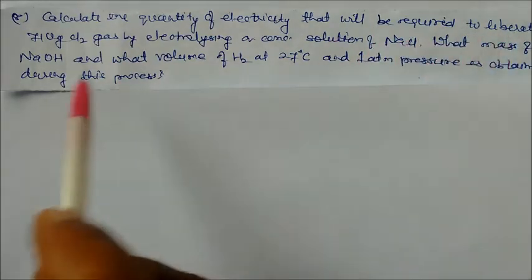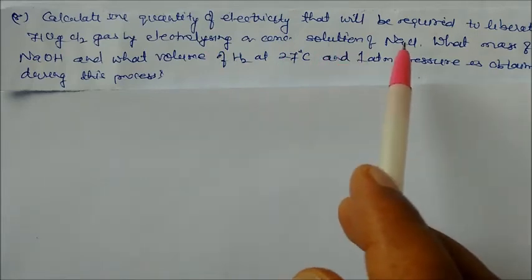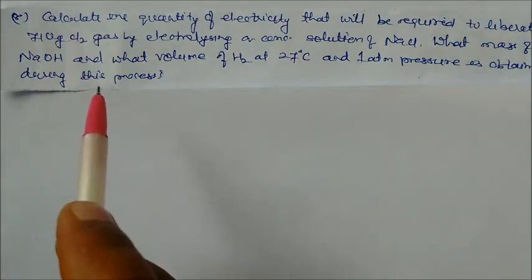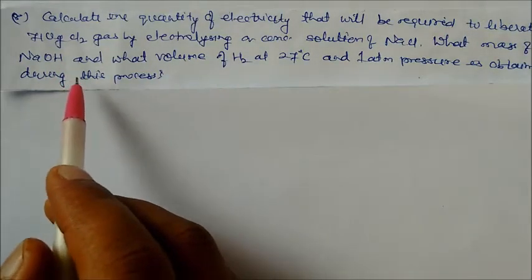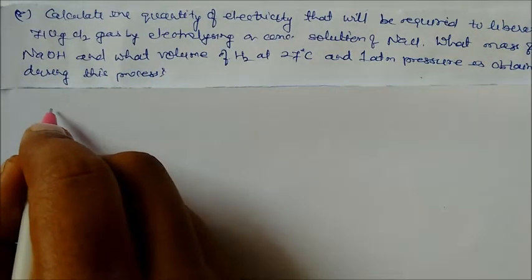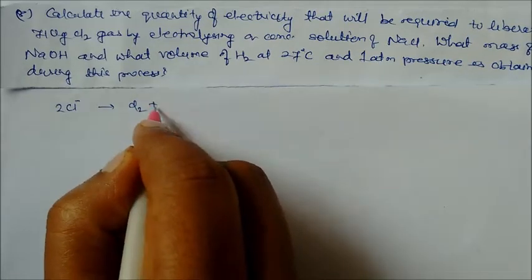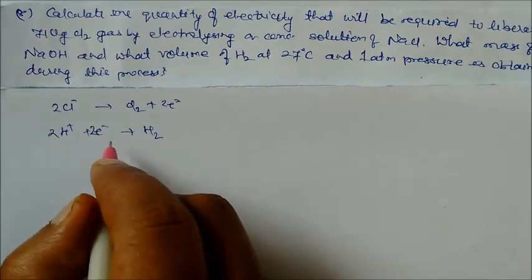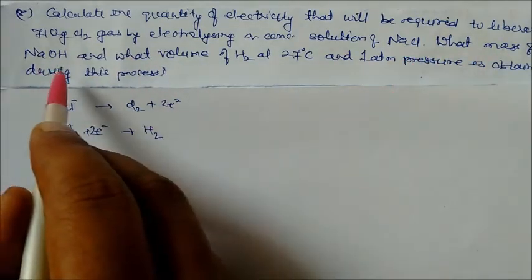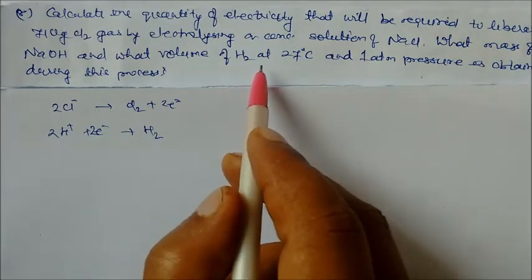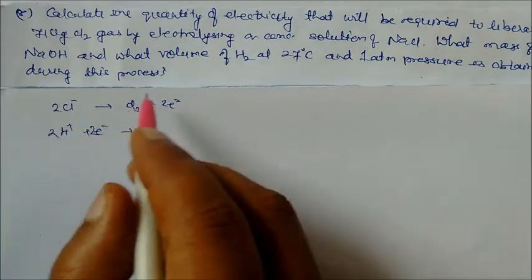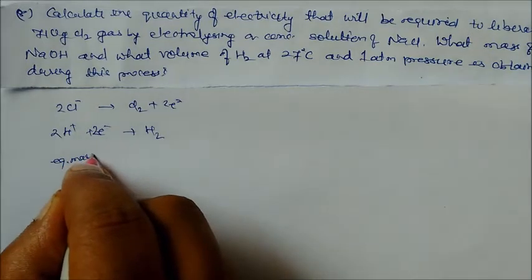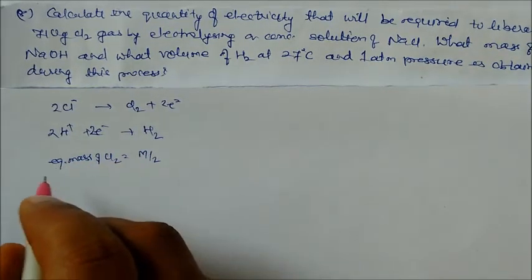Question 8: Calculate the quantity of electricity required to liberate 710 gram of chlorine by electrolyzing concentrated NaCl solution. Also find mass of NaOH and volume of H₂ at 27°C and 1 atm. Two electrode reactions: 2Cl⁻ → Cl₂ + 2e⁻ (anode), and 2H⁺ + 2e⁻ → H₂ (cathode). First find the equivalent mass of Cl₂: molar mass / 2 = 71 / 2.